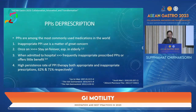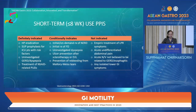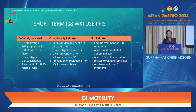Definite short-term indications for PPI use (less than 8 weeks) include H. pylori eradication, stress ulcer prophylaxis for ICU patients with high-risk factors such as mechanical ventilation over 48 hours or low platelet count, uninvestigated dyspepsia, and treatment of NSAID-related peptic ulcer disease. PPIs are not indicated for empirical treatment of LPR symptoms, acute undifferentiated abdominal pain, acute non-ulcer vomiting unrelated to GERD or esophagitis, or any isolated lower GI symptoms.